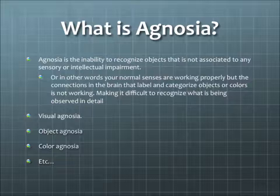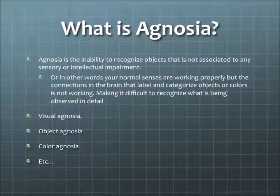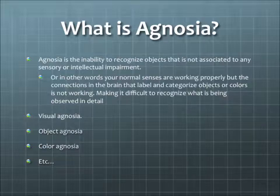There are many different types of agnosia. Here we will be discussing visual agnosia. Visual agnosia itself has various subcategories such as movement agnosia, which interferes with recognition of movement, object agnosia, and color agnosia, which are associated with objects and color respectively.